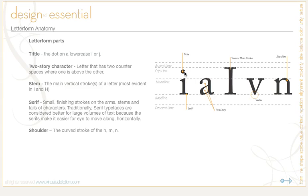The tittle is the dot on a lowercase i or j. A two-story character is a letter that has two counter spaces where one is above the other. A stem is the main vertical stroke of a letter — it's most evident in capital I's and capital H's, and sometimes referred to as the main stroke. The serif is the small finishing stroke on arms, stems, and tails of characters, and you can see serifs here on the I, the V, and the N. Traditional serif typefaces are considered better for large volumes of text because the serifs make it easier for the eye to move along horizontally, and we'll talk more about this in an upcoming lecture.